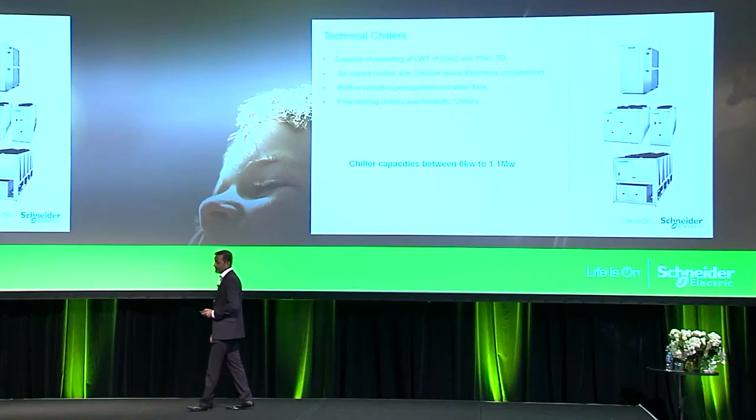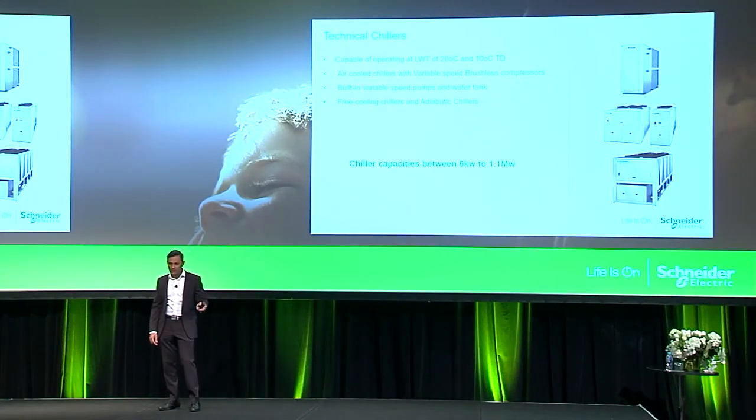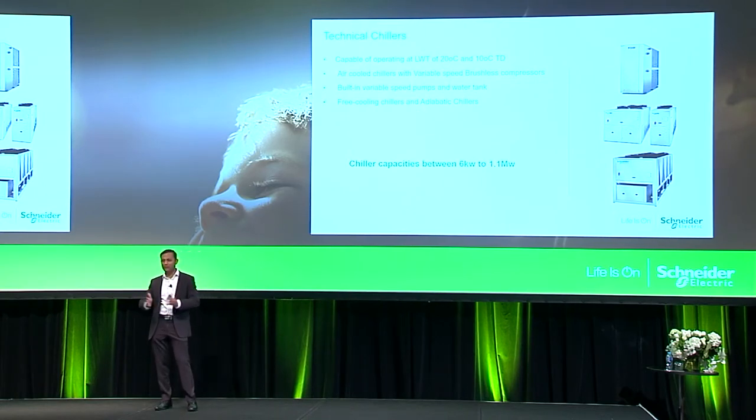Once chiller capacity exceeds 100 kilowatts, you can have a free cooling chiller that uses ambient air to partially compensate mechanical cooling. Once capacity exceeds 300 kilowatts, you can have adiabatic chillers. The range spans from 6 kilowatts — the smallest chiller — up to 1.1 megawatts, with about 50 models in between.